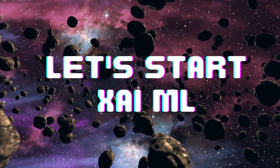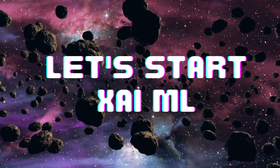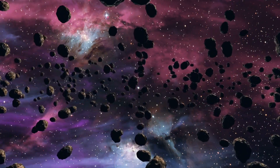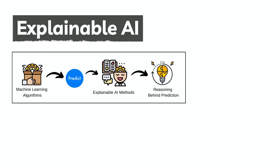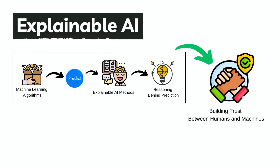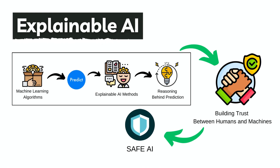So let's start with the very first question: what is explainable AI? Explainable AI is a set of processes and methods that allows humans to understand the reasoning behind our machine learning model predictions and trust the results. It helps humans to trust on models' accuracy, fairness and transparency, thus building a very safe AI for mankind.